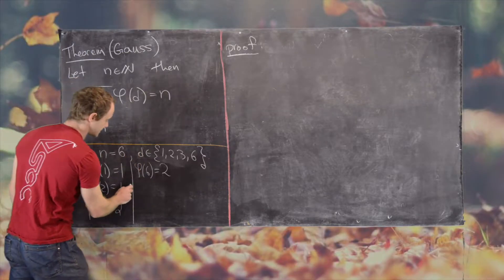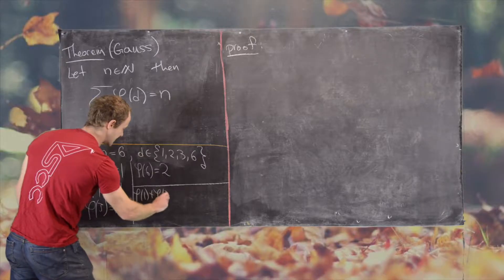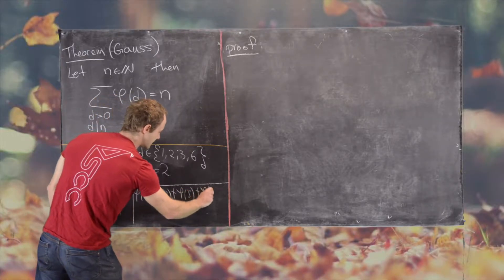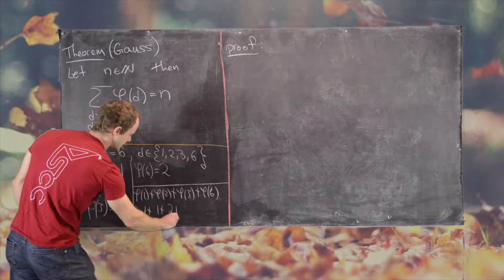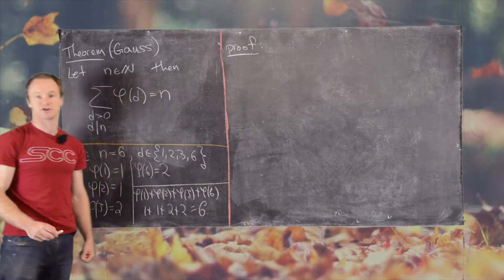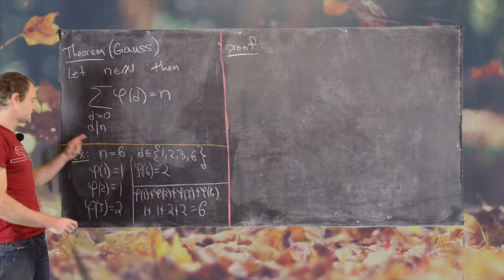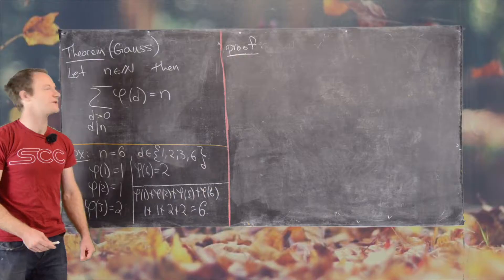And now notice that we get phi of 1 plus phi of 2 plus phi of 3 plus phi of 6. So that gives us 1 plus 1 plus 2 plus 2, which is 6, which is the original number that we started with. So now that we've seen an example of this in action, let's look at what the proof does.